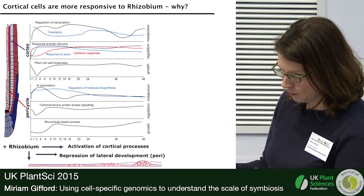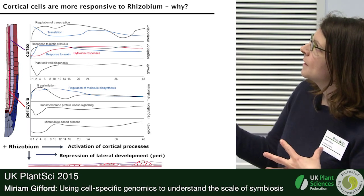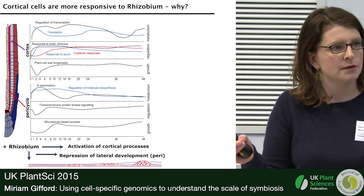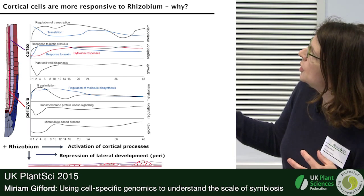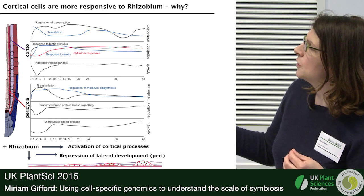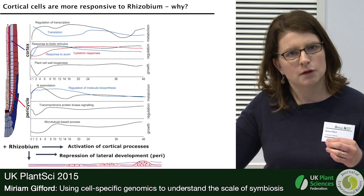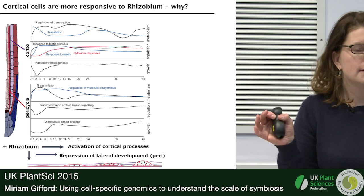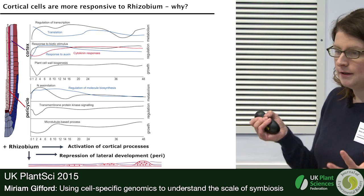Looking at this with our time series experiments, we see in the pericycle a small number of changes occurring, but in the cortex a much more diverse response to rhizobium. There is modification of energy signaling and growth responses, including modifications in key hormones. This is in Arabidopsis, and we see a similar modification of those key hormones in Medicago — so there are potentially some underlying cortex-specific functions we could tap into in non-legumes.